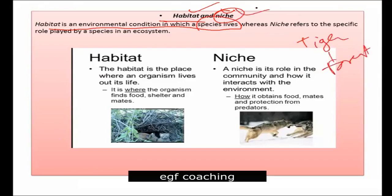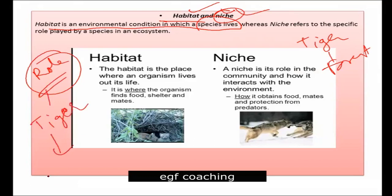Niche means the role of a species in the ecosystem — what it is doing there. For example, the tiger is consuming herbivores; it is killing them and then eating them.